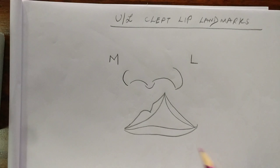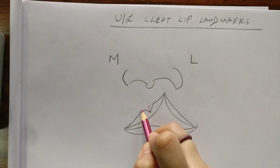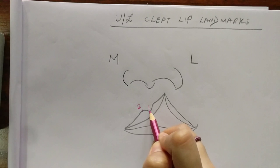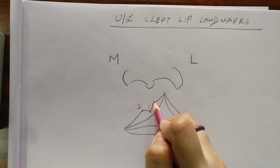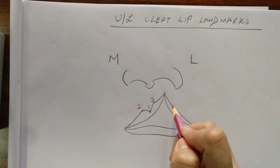Now the first point, that is point 1, is the peak of the cupid's bow. Point 2 is the peak of the cupid's bow on the non-cleft side. The distance between 1 and 2 is measured with the help of a caliper in order to get point 3, which will be the peak of the cupid's bow on the cleft side.